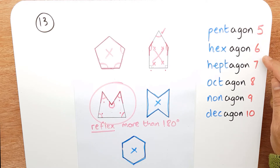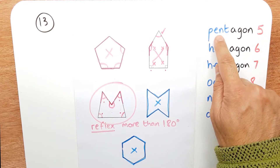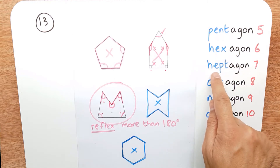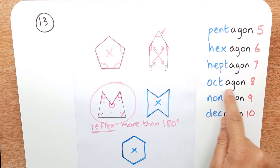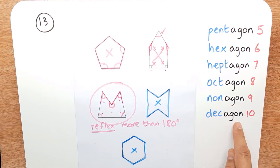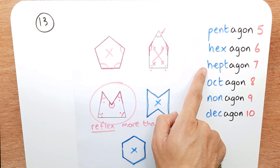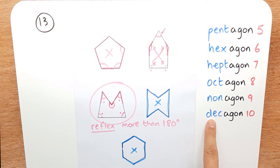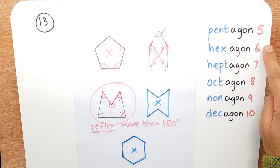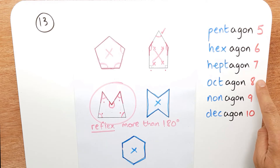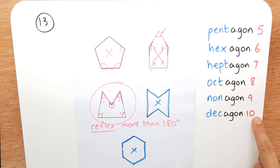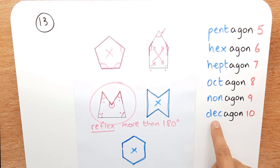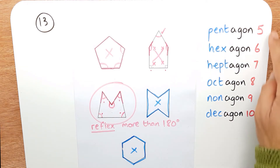Learn these words: pentagon, hexagon, heptagon, octagon, nonagon, and decagon. The prefixes in blue — pent, hex, hept, oct, non, and dec — are very useful. Pent is five, hex is six, hept is seven, oct is eight (you'll come across octopus), non is nine, and dec is ten — as in December, decimal, or decade.